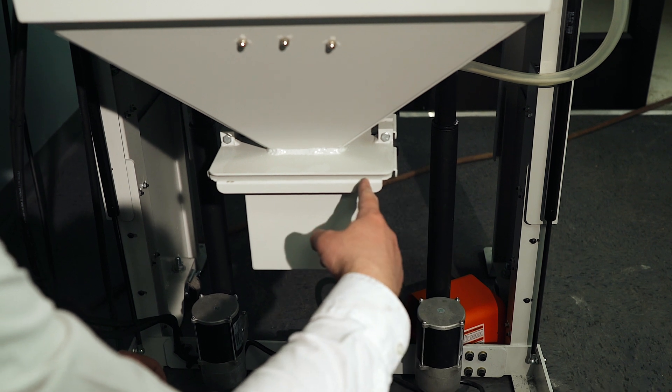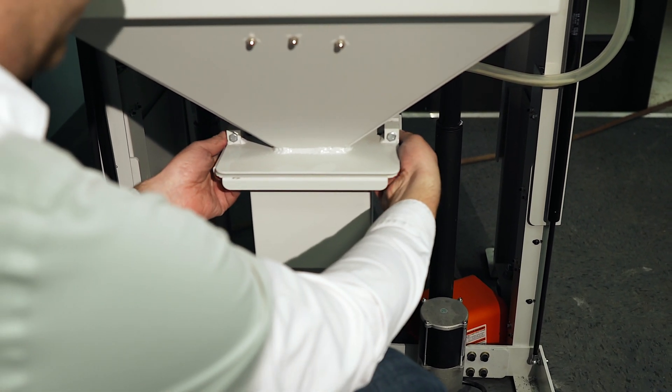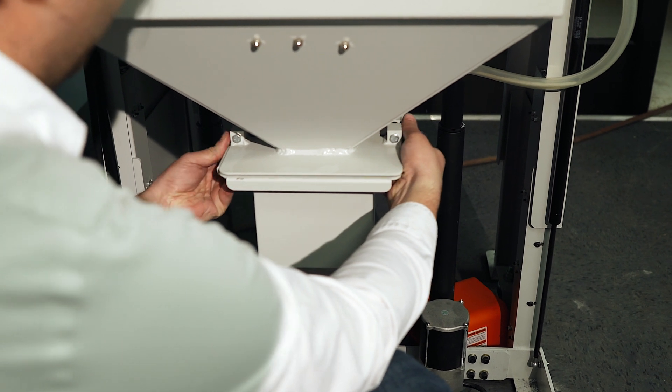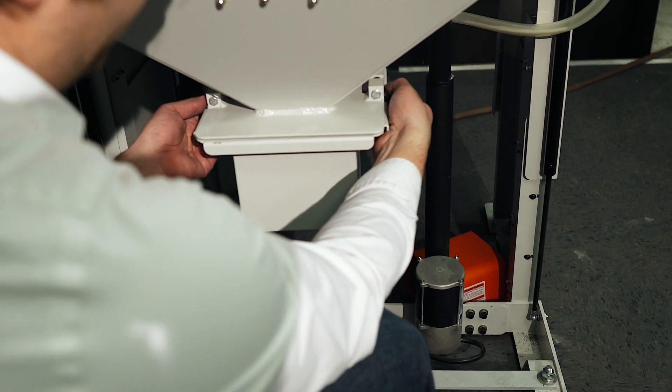In order to remove the dustbin from the collector, loosen the thumb screws. After they're loose, pull them sideways while holding the dustbin. Reinstall in the opposite fashion.